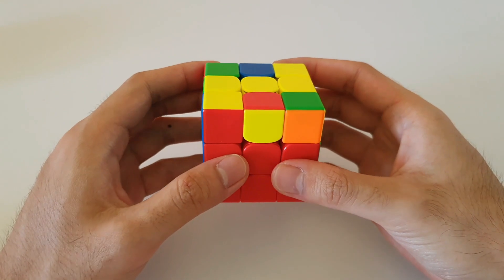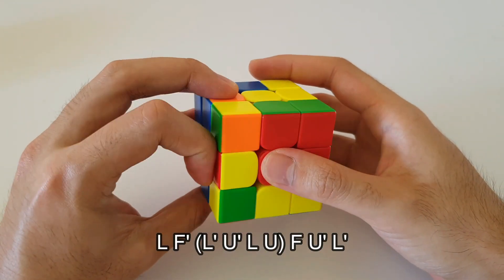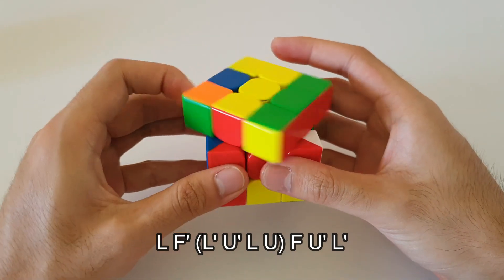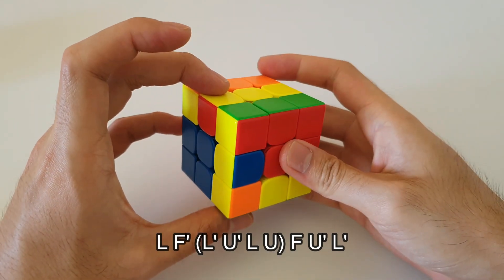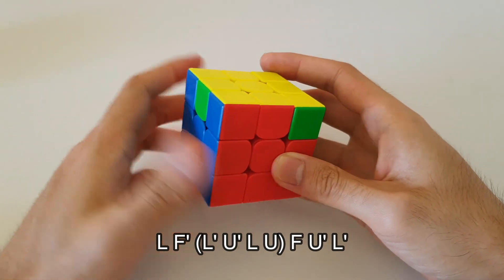That would look something like this. It starts off with an L, F', then you do a left sexy, and then finally you just match up the yellow colors, and there's your algorithm.